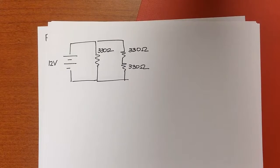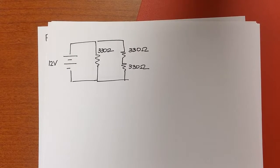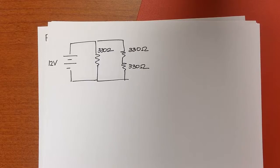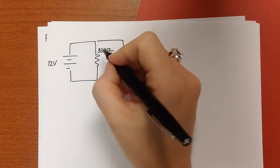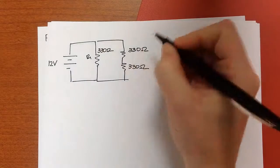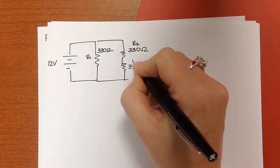Alright, so let's look at a combination circuit. So now there are some that are in series and some that are in parallel. So I'm just going to name this one R1, R2, R3.